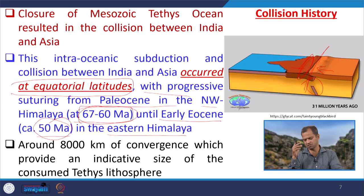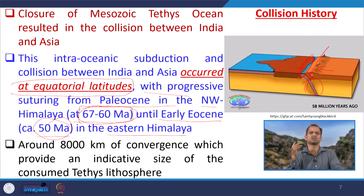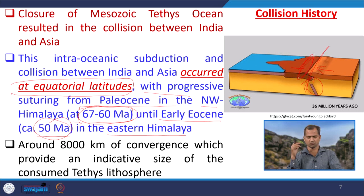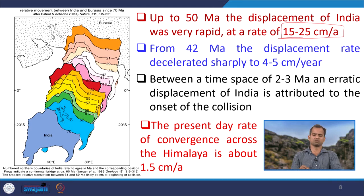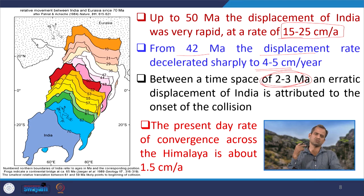Up to 50 Ma, the displacement of India was very rapid — around 15 to 25 centimeters per annum. From about 42 million years, the displacement changed to 4 to 5 centimeters per year. This means this was the time when the collision was most intense, causing the motion to slow down drastically over a span of around 2 to 3 million years — this drastic change in plate velocity was recorded.